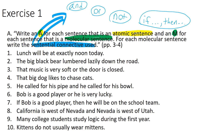Number one: 'Lunch will be at exactly noon today.' It is declaring something to be the case, so we can analyze it in mathematical logic. There's no AND, OR, NOT, or IF-THEN, so it's definitely just an atomic sentence. Likewise for number two: 'The big black bear lumbered lazily down the road.' It's declaring something to be the case — in principle it could be true or false — and there's no AND, OR, NOT, or IF-THEN. It's just atomic.